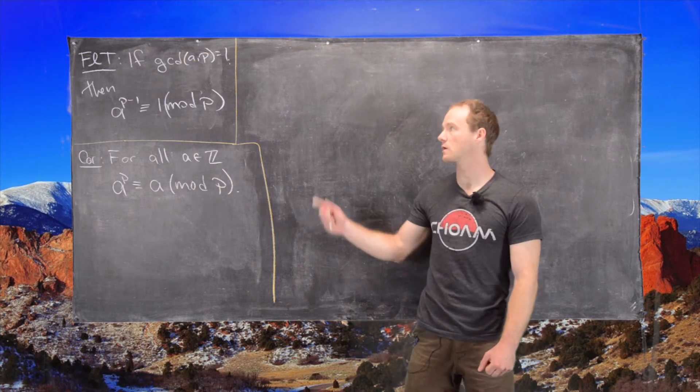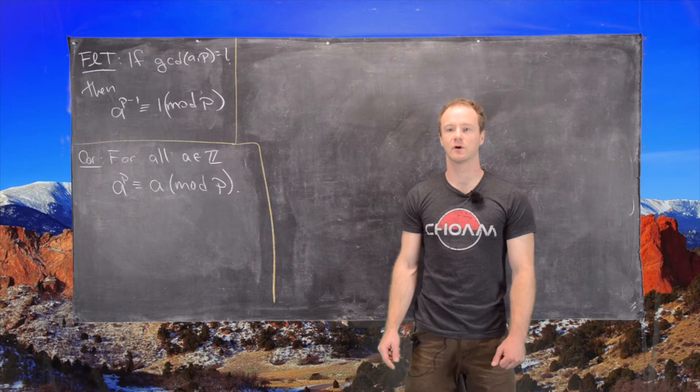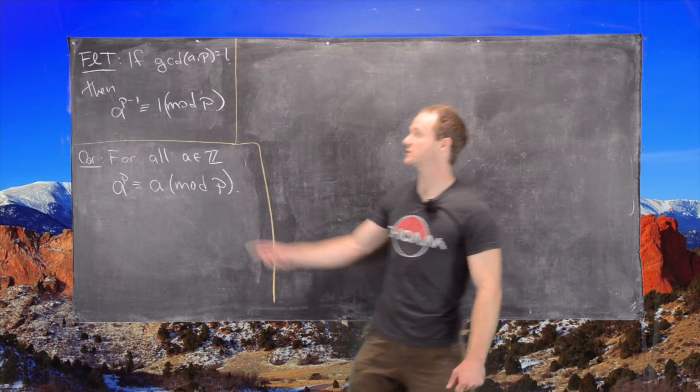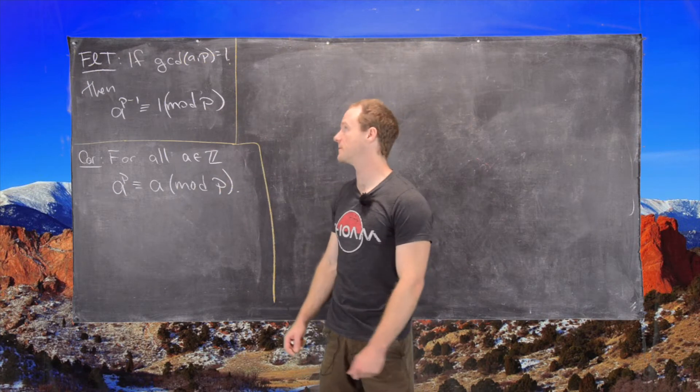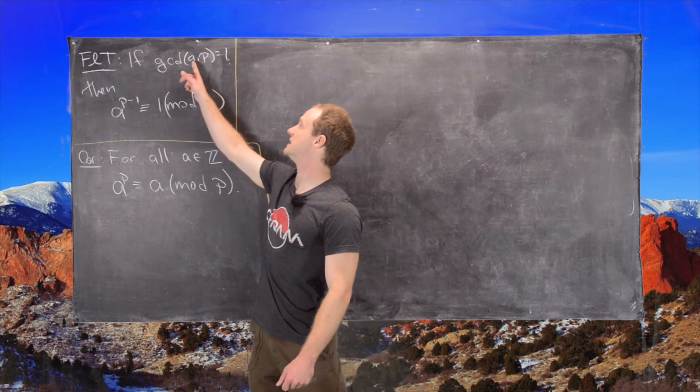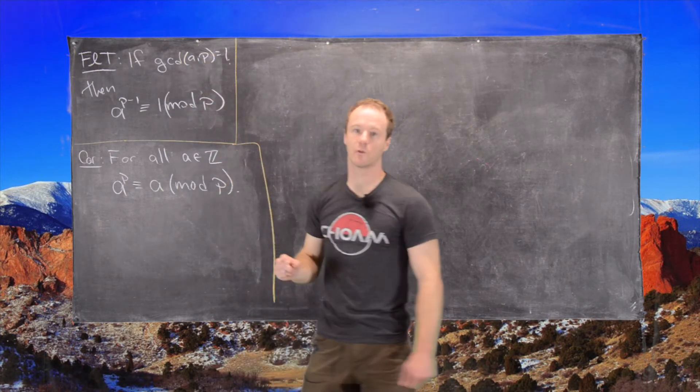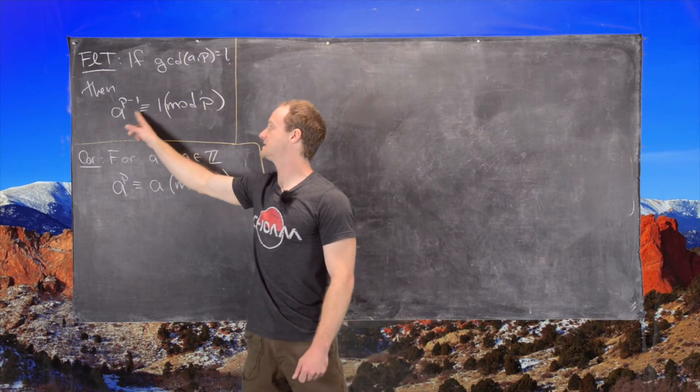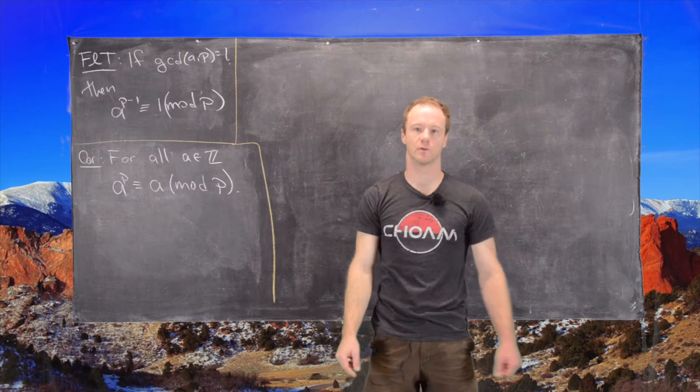In this video we want to look at a quick corollary to Fermat's Little Theorem and then we'll also look at a result that follows from Fermat's Little Theorem. So let's just recall Fermat's Little Theorem. It says that if the GCD of A and P where P is a prime is equal to 1, then A to the P minus 1 is congruent to 1 mod P.